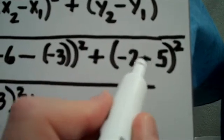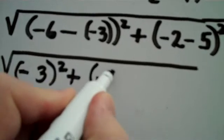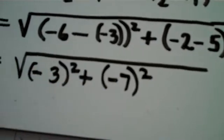Inside here, negative 2 minus 5 is a negative 7 quantity squared.